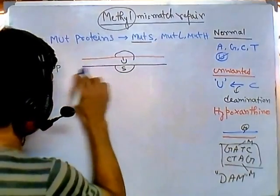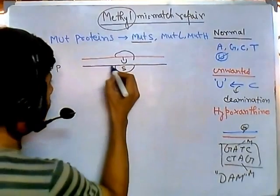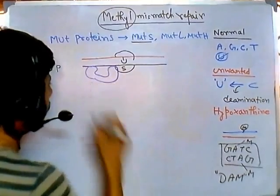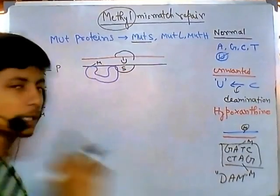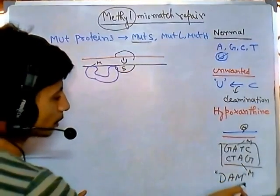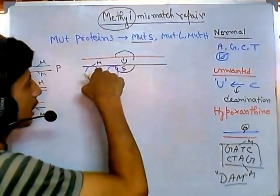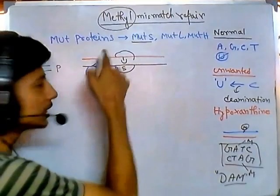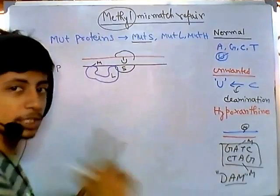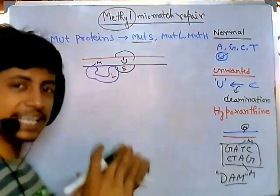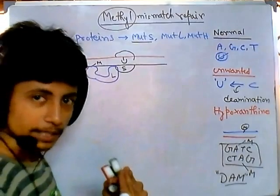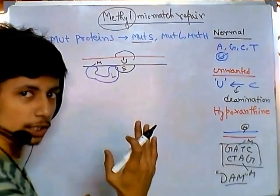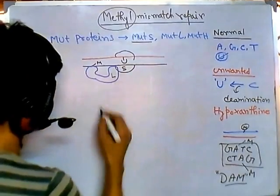MutS binds to the region where the wrong nucleotide, such as uracil, was incorporated. However, MutS cannot recognize which strand is the new strand that needs to be cleaved. To distinguish the parent from the daughter strand, MutS recruits MutL. MutL is then recruited, and MutL can bind with the methylated region — recognizing the Dam methylation on the parent strand — and distinguishes between parent and daughter strand. Once the distinction is made, MutL brings the daughter strand into position for cleavage.